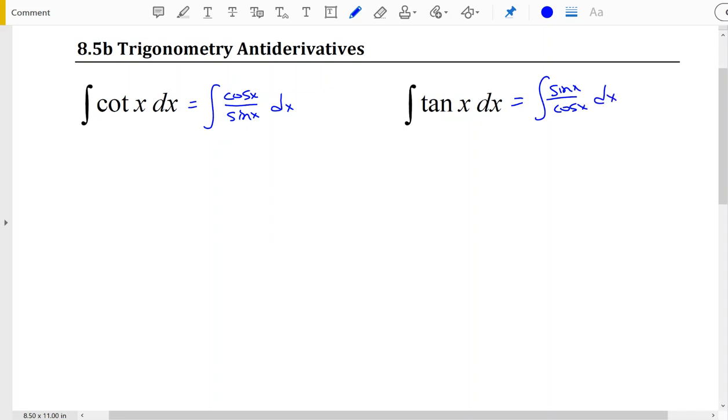Hopefully we notice with each of these that one of the two functions, sine of x or cosine of x, is the derivative of the other. So if we want to do this antiderivative, hopefully we think u-substitution. I'm going to give you a chance to pause the video, see if you can calculate one or both of these antiderivatives, start it back up, and see how you're doing.